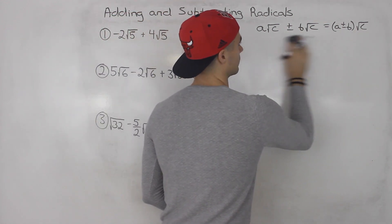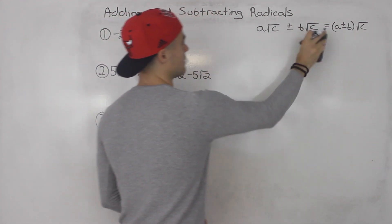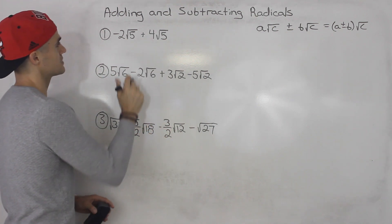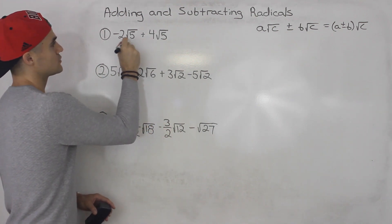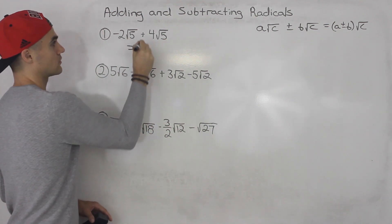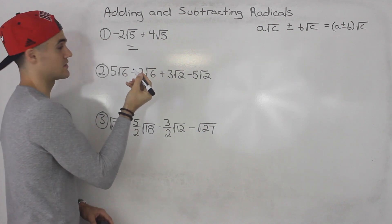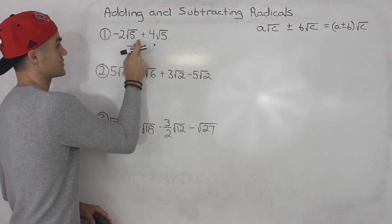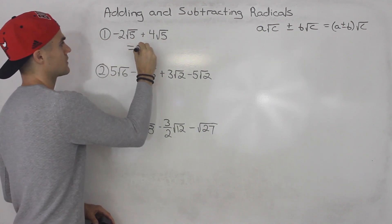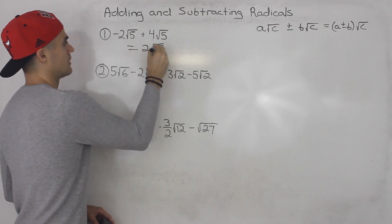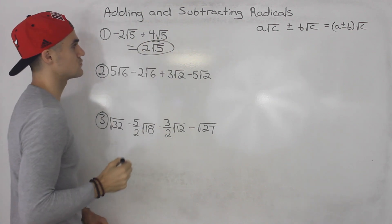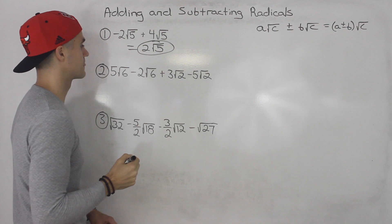Taking this and applying it to the examples: negative 2 root 5 plus 4 root 5 — notice the radicals are the same, so we can add the coefficients in front. Negative 2 plus 4 gives us 2, and then the radical stays the same. So 2 root 5 is the answer for that.